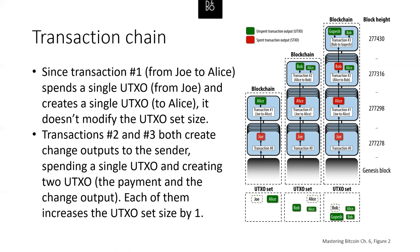Looking at the list of blocks, in block 277298, Alice is receiving some Bitcoin from Joe. Alice acquired some Bitcoin so she could use it to buy coffee from Bob. First she had to get that Bitcoin from Joe — a transfer of 0.1 Bitcoin from Joe to Alice in block 277298. Joe apparently got that Bitcoin in block 277278.